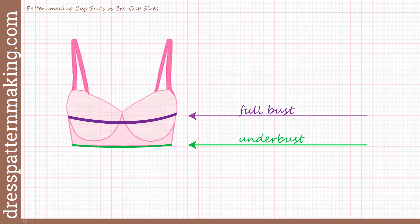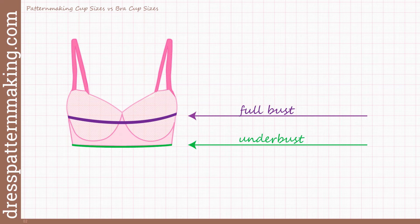Bra bust cups are determined by the difference between your underbust and your full bust. The underbust measurement is what determines your band size, and the band is what does the work of supporting the breasts — the arm straps actually don't do any work in supporting the breasts. The underbust is totally irrelevant for your bodice block; it's not taken and not needed to draft the bodice block.